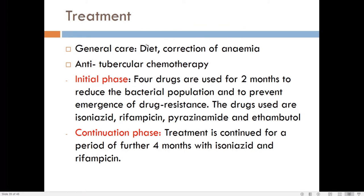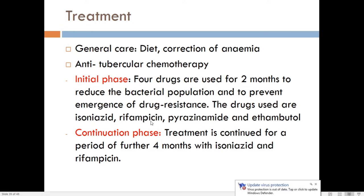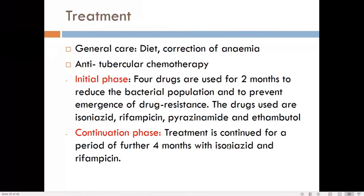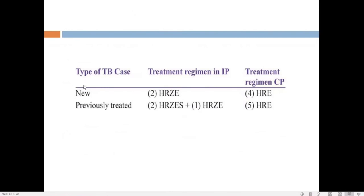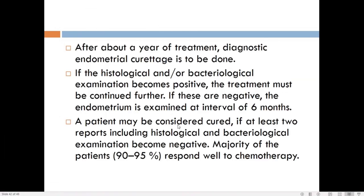Management includes general care with proper nutrition and correction of anemia. Anti-tubercular chemotherapy uses four drugs in the initial phase and two in the continuation phase: 2 months of HRZE (Isoniazid, Rifampicin, Pyrazinamide, Ethambutol) followed by 4 months of HR (Isoniazid and Rifampicin) — total 6 months. Previously treated patients also receive Streptomycin.